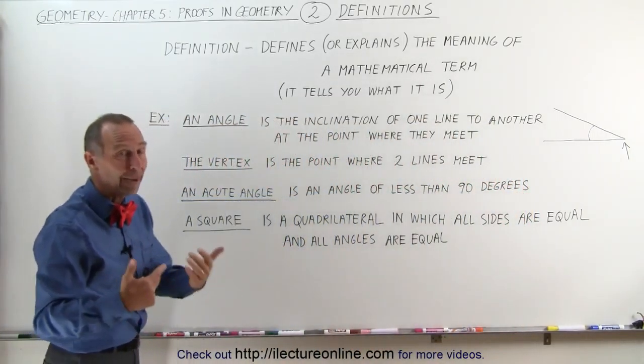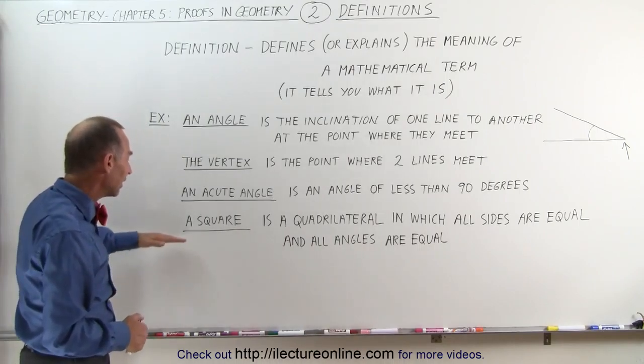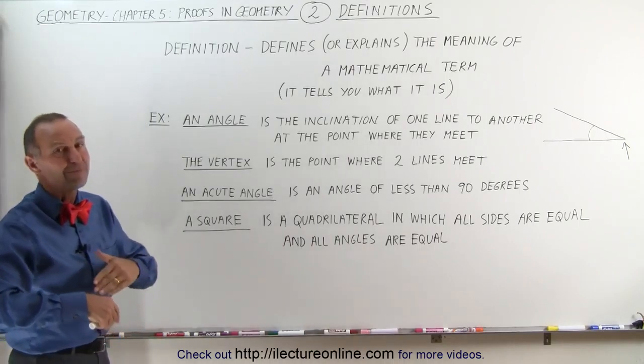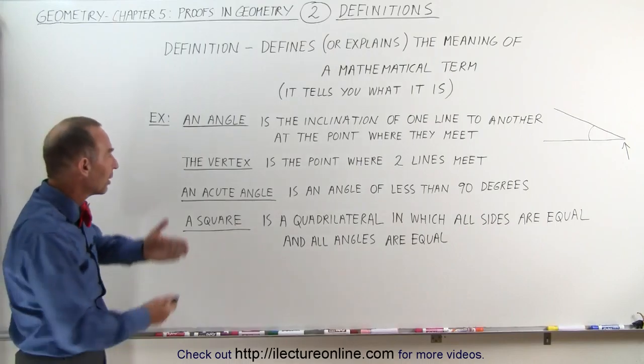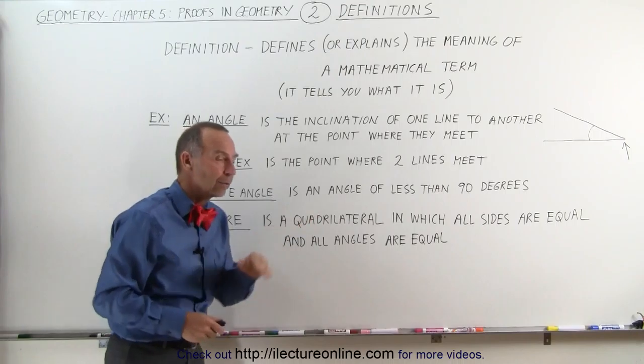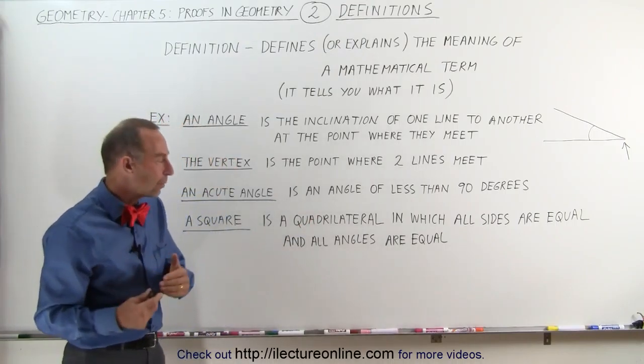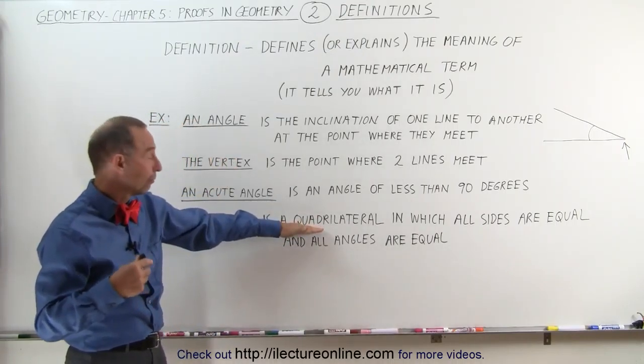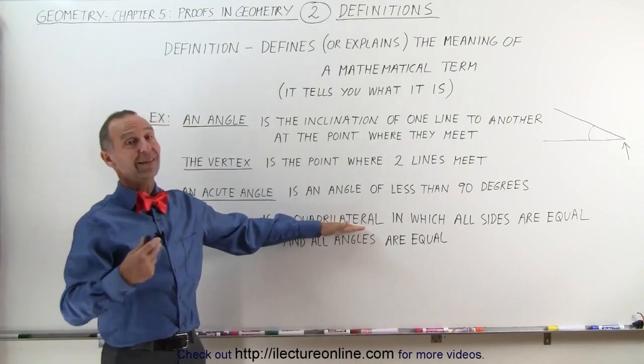It simply is by definition. And finally, a square. Of course we have many more things that are defined, but here are simply four examples. And here we have a square which is a quadrilateral. Now quadrilateral, quad means four and lateral means side.